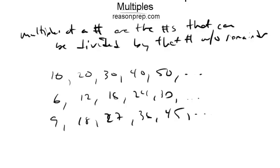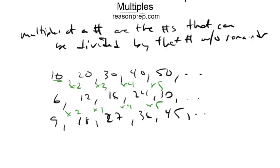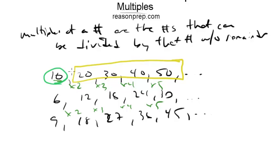So what's going on here? Well, we're simply just multiplying the original number by 2, by 3, by 4, by 5, and so on. And that's all there is to it. So how does the original definition make sense? Well, these multiples can all be divided by the original number without a remainder. In other words, this original number is a factor of each one of these. So that's what the original definition says.